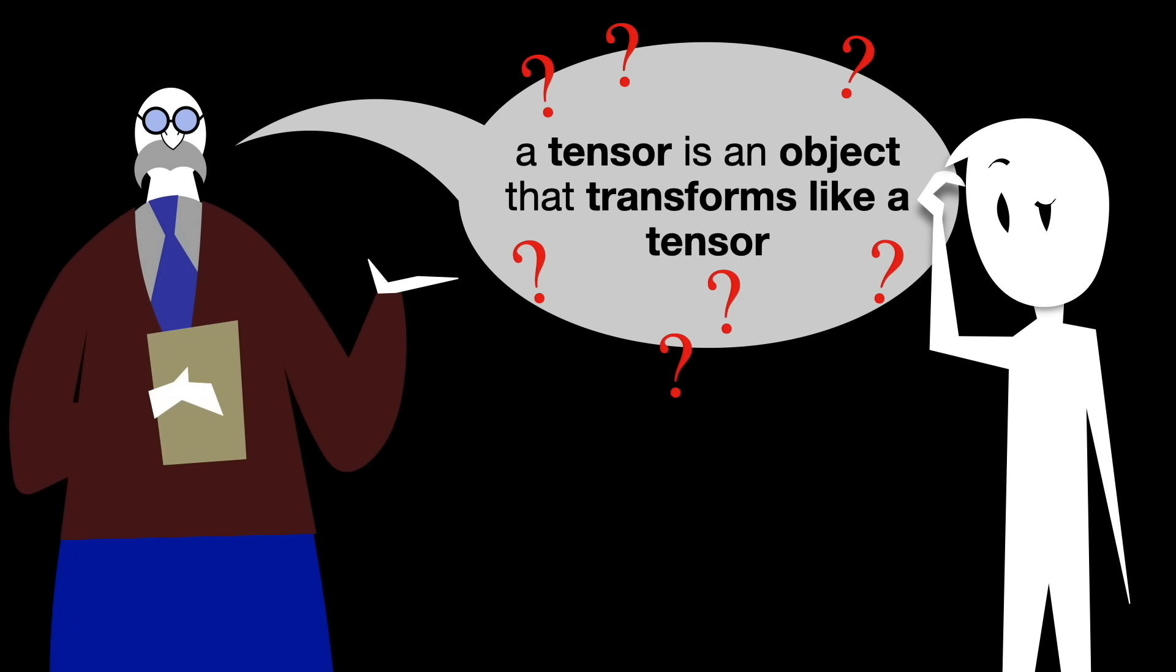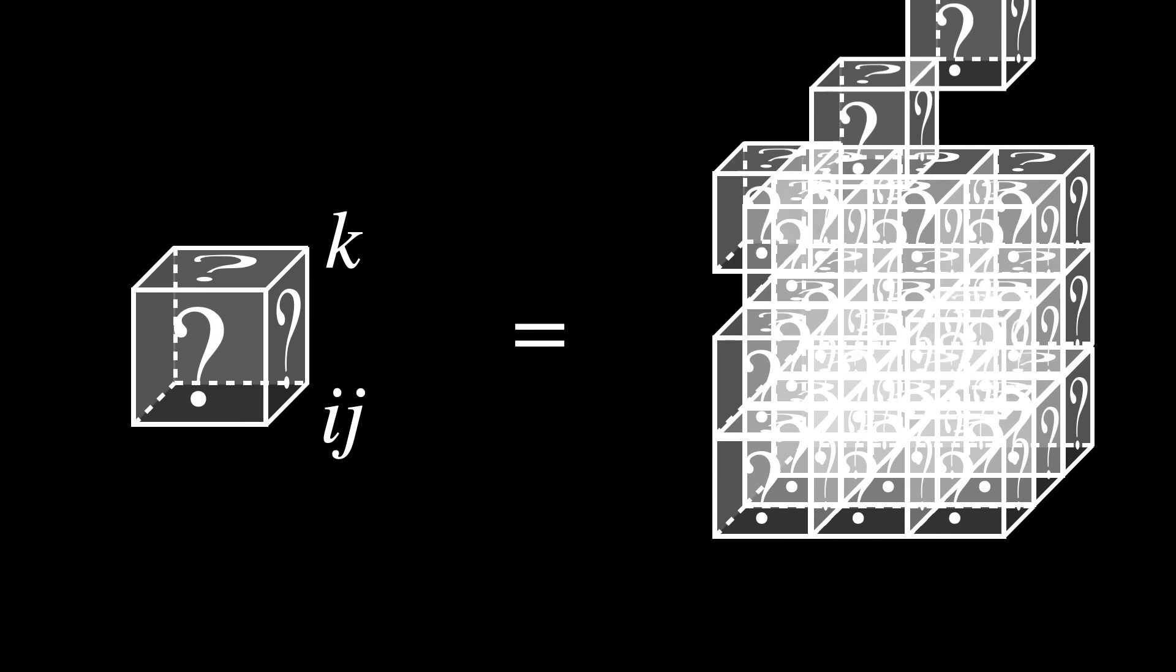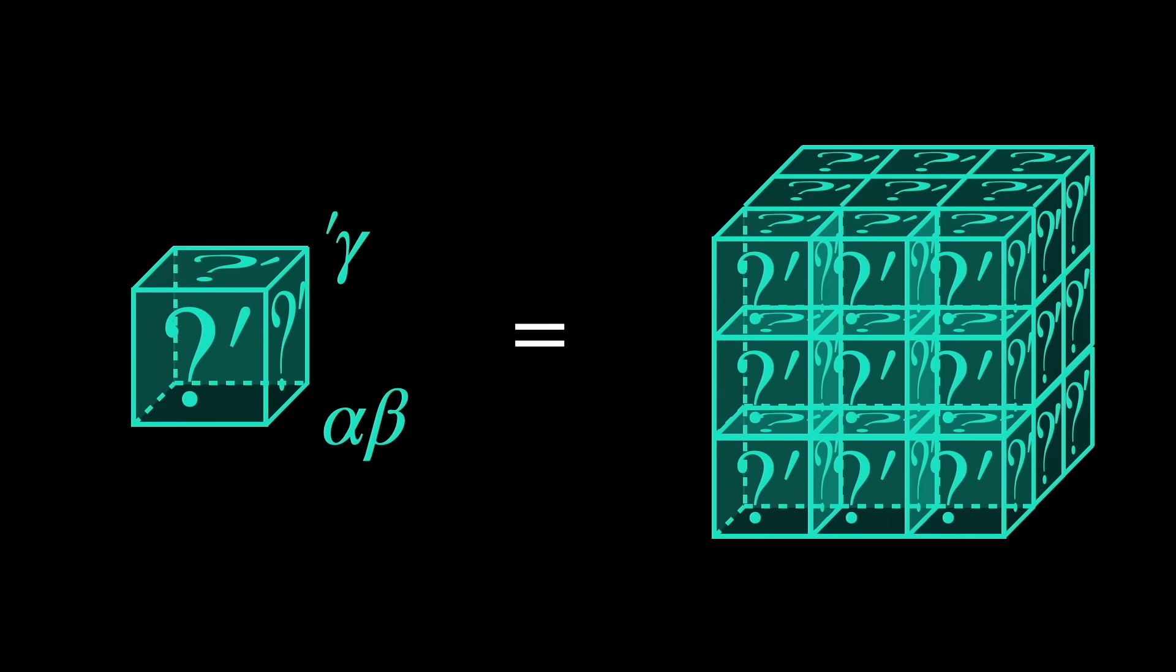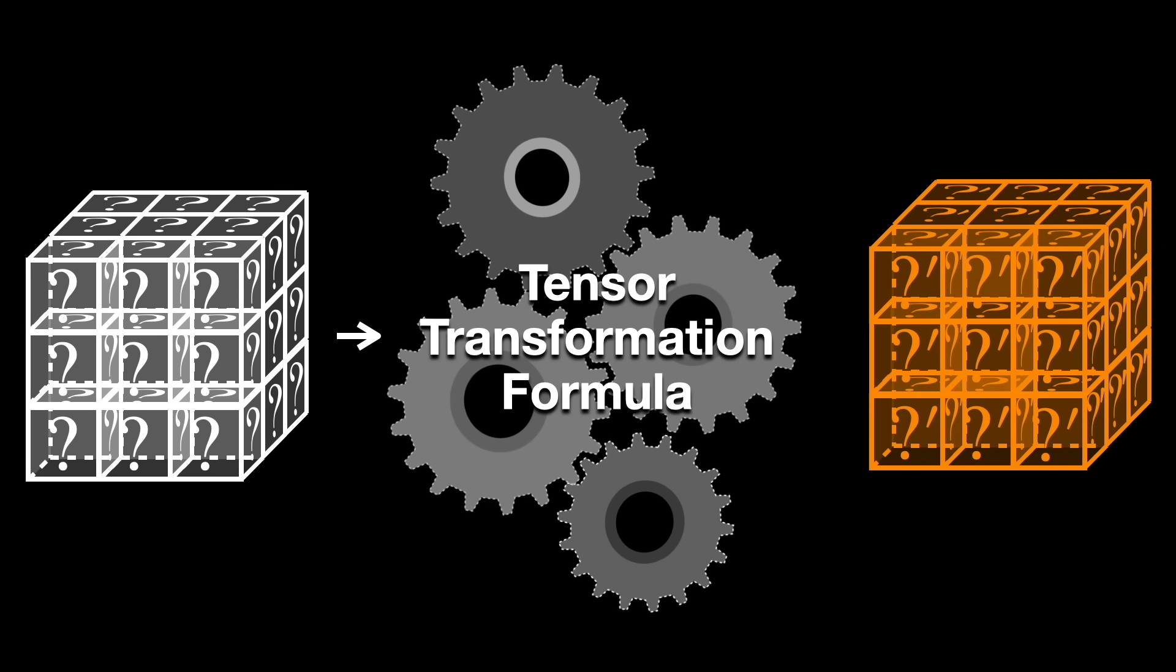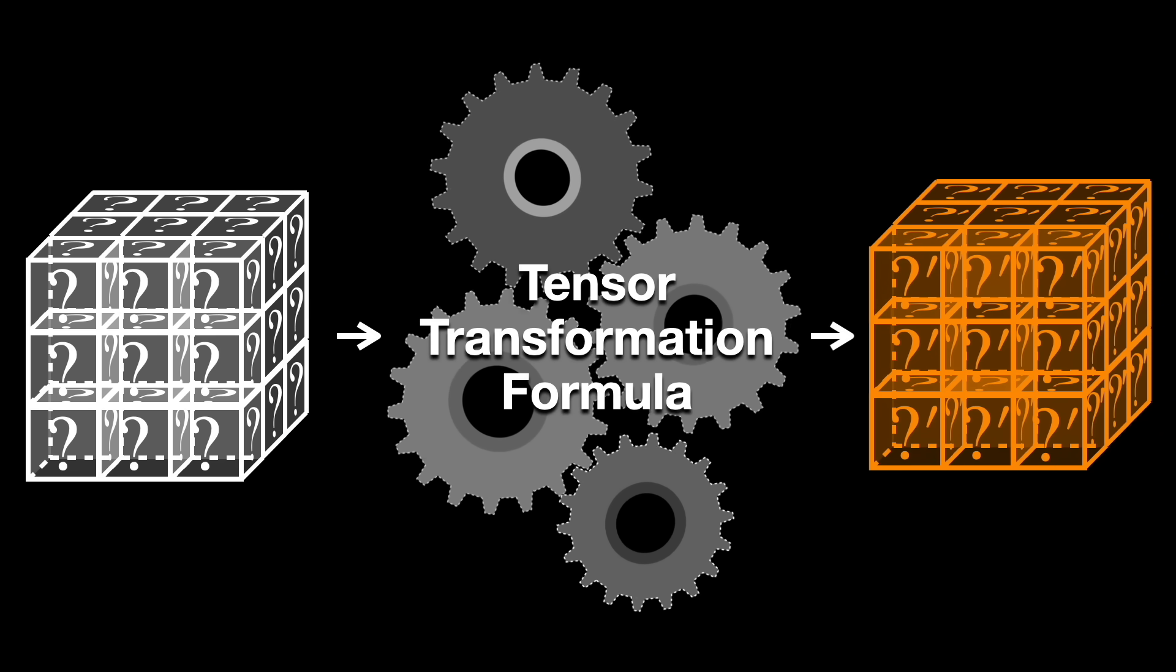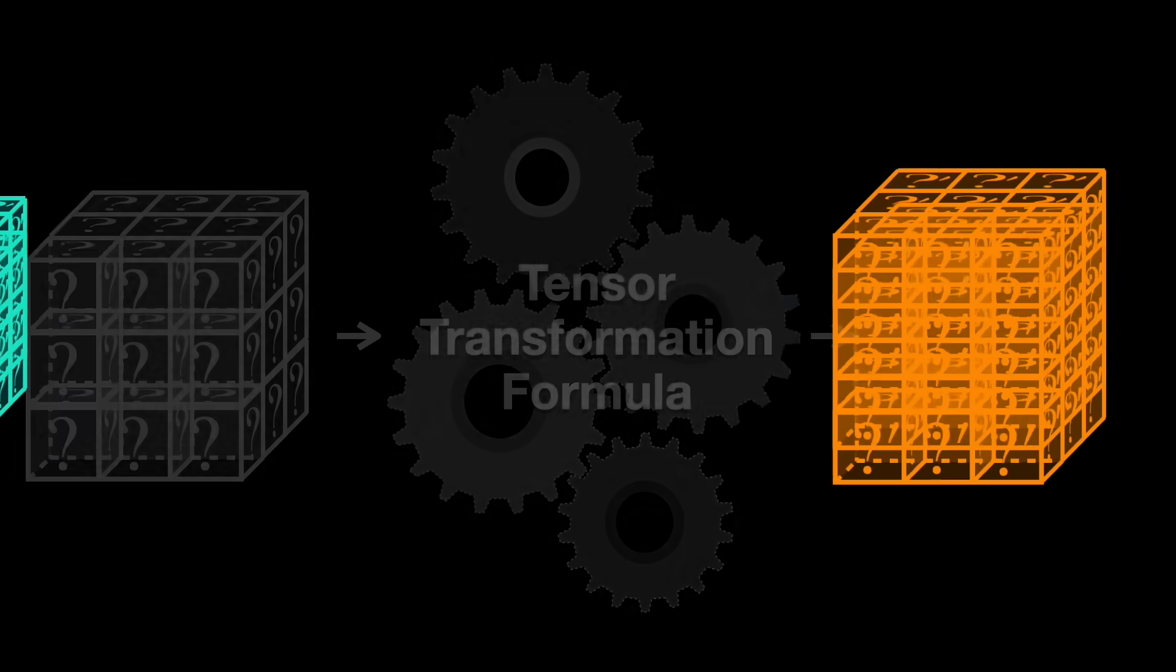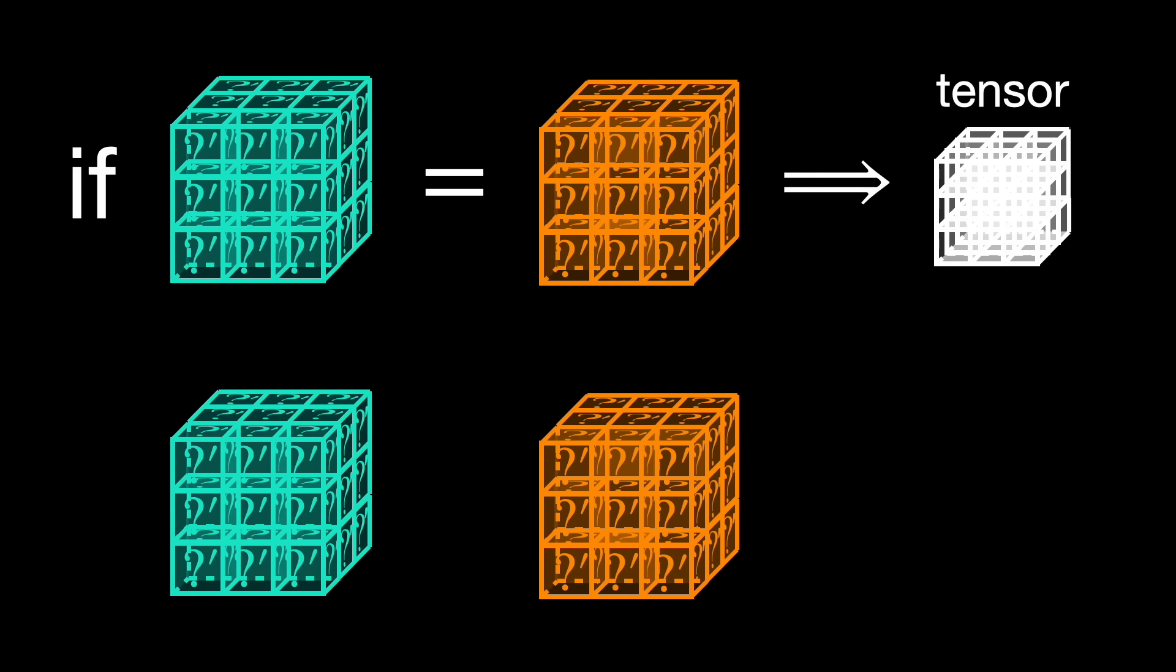Let's see a concrete example of a tensor transformation. We want to pick a candidate for a tensor, write it down in local coordinates, and transform it to a new coordinate system. Then we take the original candidate once again, transform it using the tensor transformation formula, and finally compare the two results. If they match, then we have a legitimate tensor.